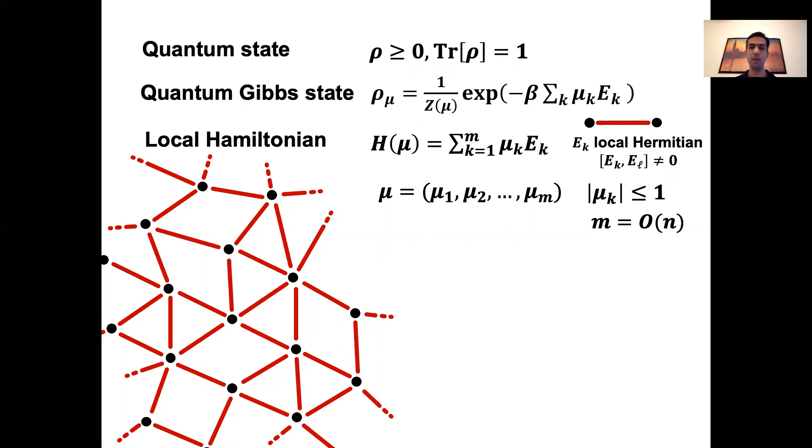The coefficients μ_k are called the interaction coefficients. We assume there are M of them, which for bounded degree graphs is of the order of the number of vertices N. This beta factor here is motivated by physics and corresponds to the inverse temperature of this system. And I'll explain this in more detail soon. Finally, we call the normalization factor that makes the trace of the Gibbs state equals one, the quantum partition function.